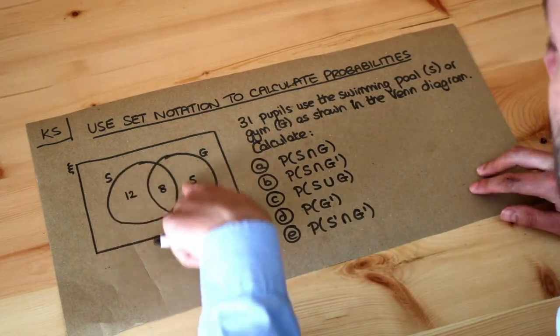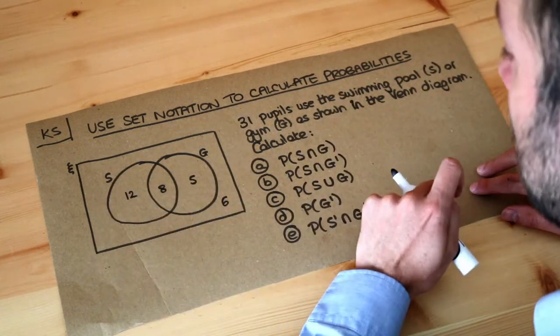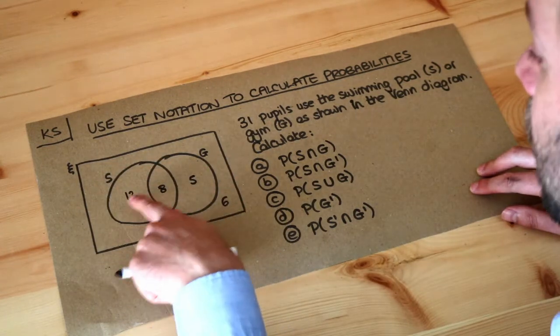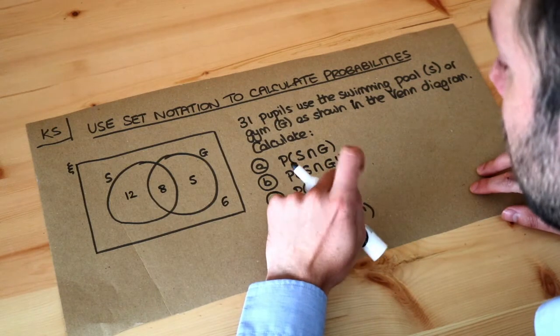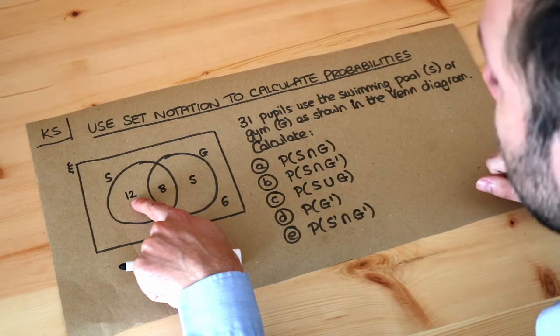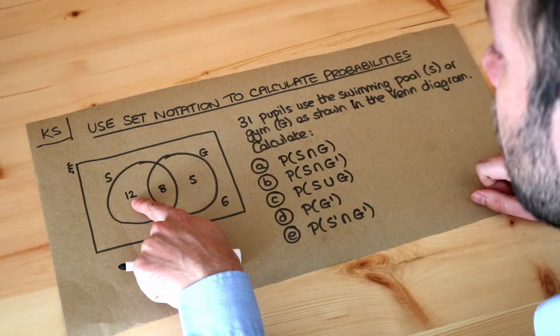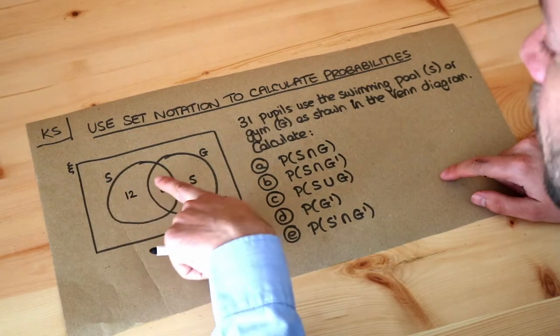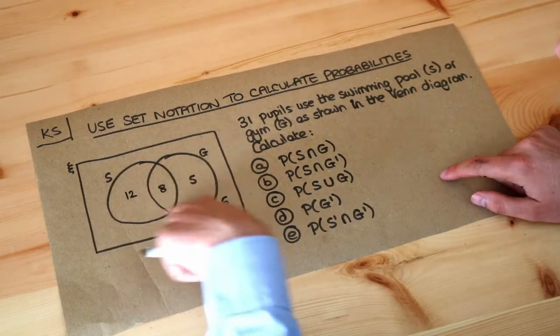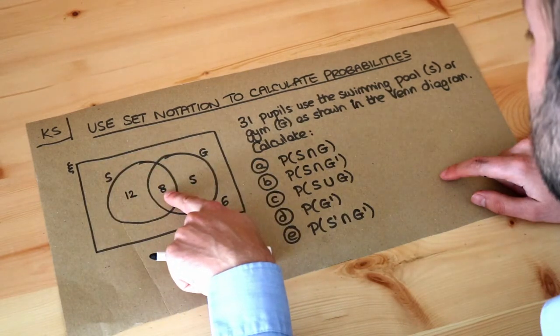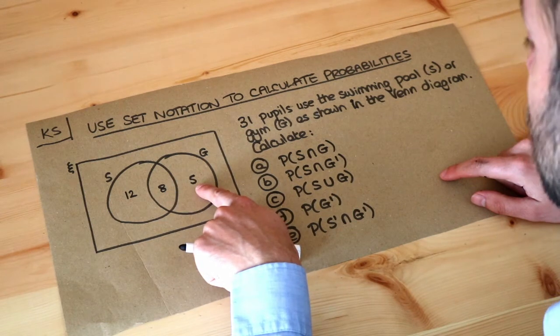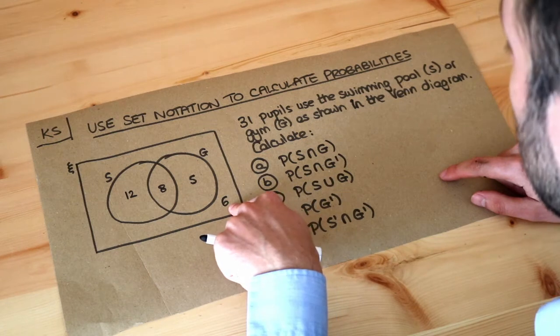For example, this circle labeled S represents the students who use a swimming pool, and the number in each region tells you how many students we have in that particular collection. These 12 students here are those who only use the swimming pool but don't use a gym because it's in the S circle but not in the G circle. These eight students are in the overlap of the S circle and the G circle, so they use both the swimming pool and the gym. These five students only use the gym, and these six students don't use the swimming pool nor the gym.